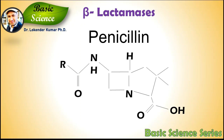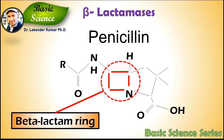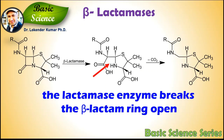The most important example is penicillin. The word penam is used to describe the common core skeleton of a member of penicillin. This core has the molecular formula of R-C9H11N2O4S, where R is the variable side chain that differentiates the penicillins from each other. These antibiotics have a common element in their molecular structure: a 4-atom ring known as beta-lactam. Through hydrolysis, the lactamase enzyme breaks the beta-lactam ring open, deactivating the molecule's antimicrobial properties.